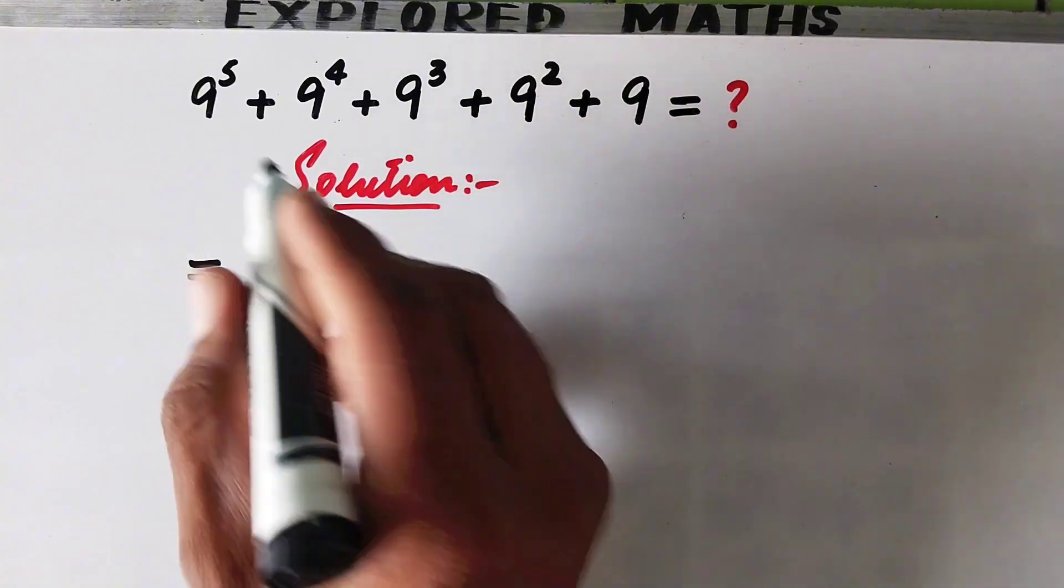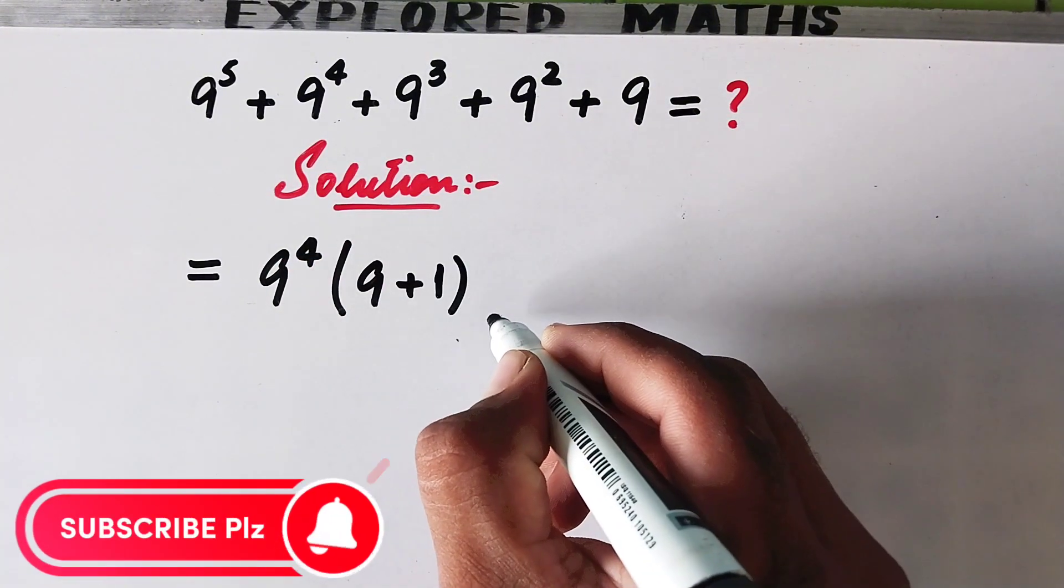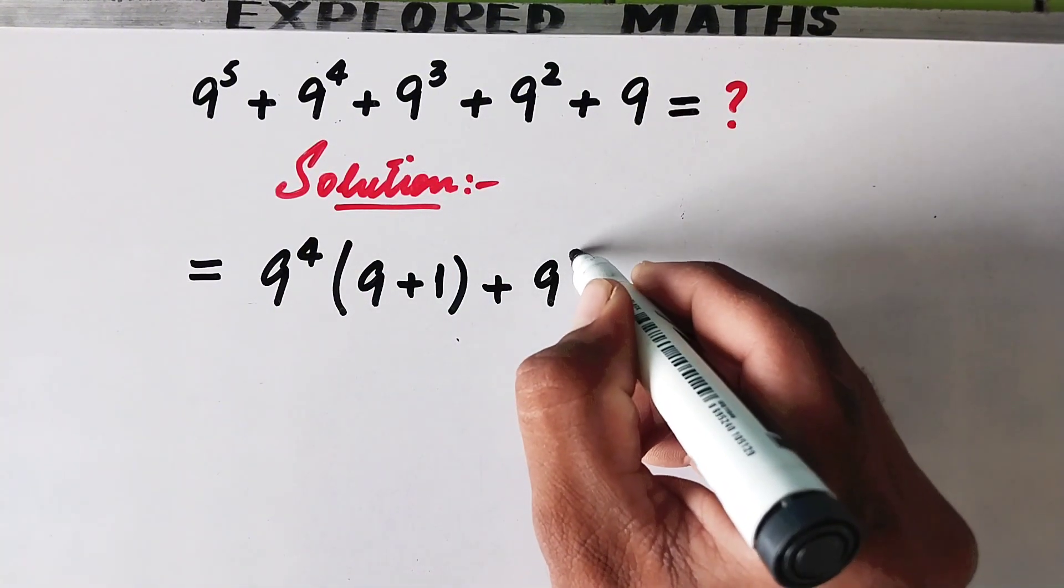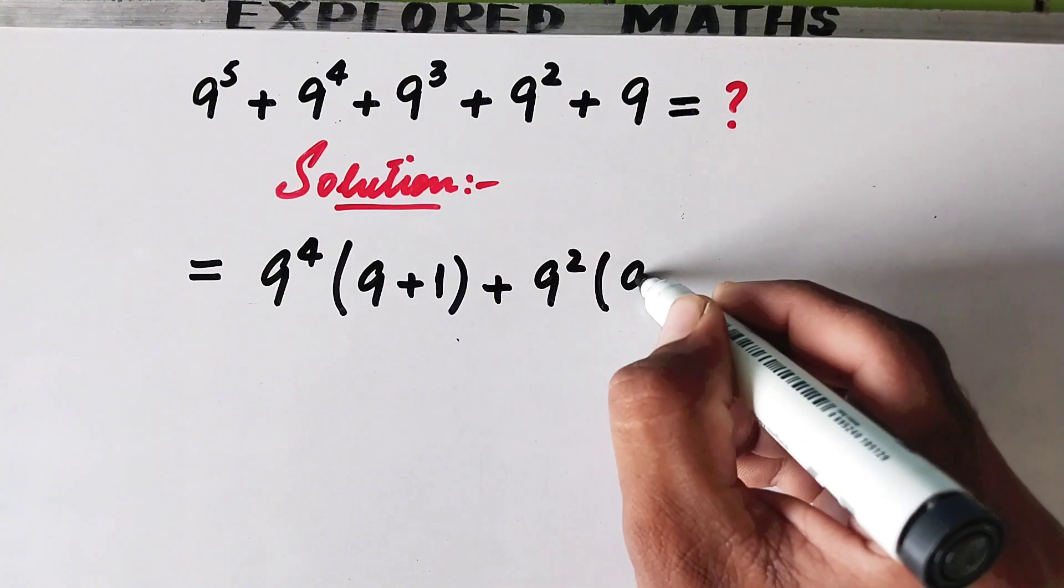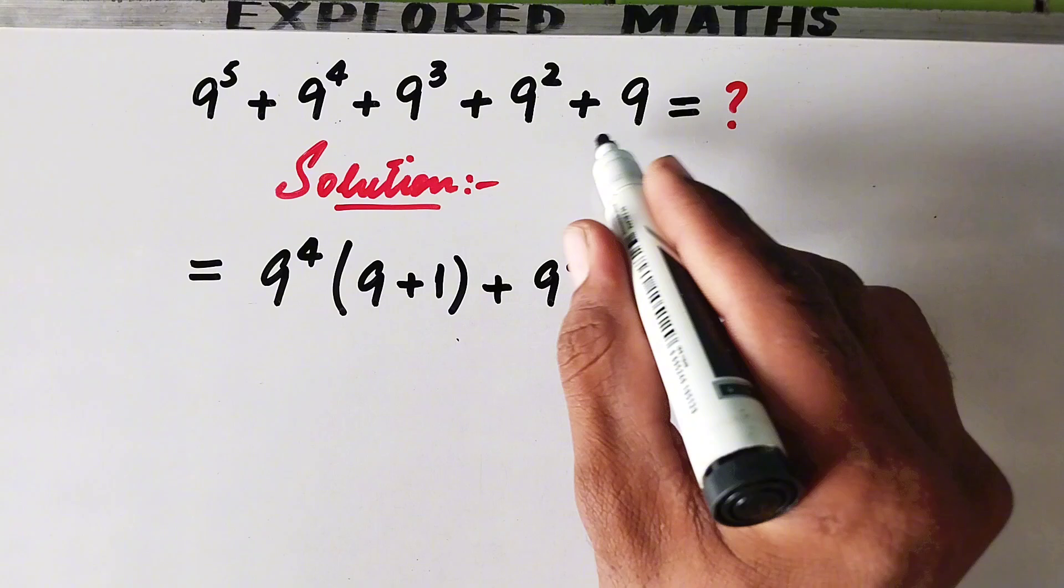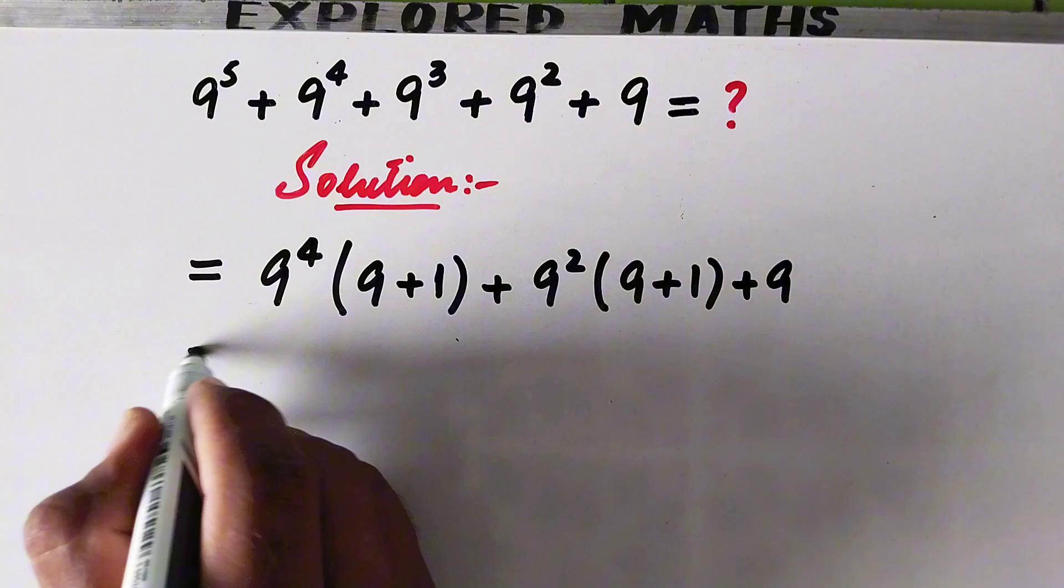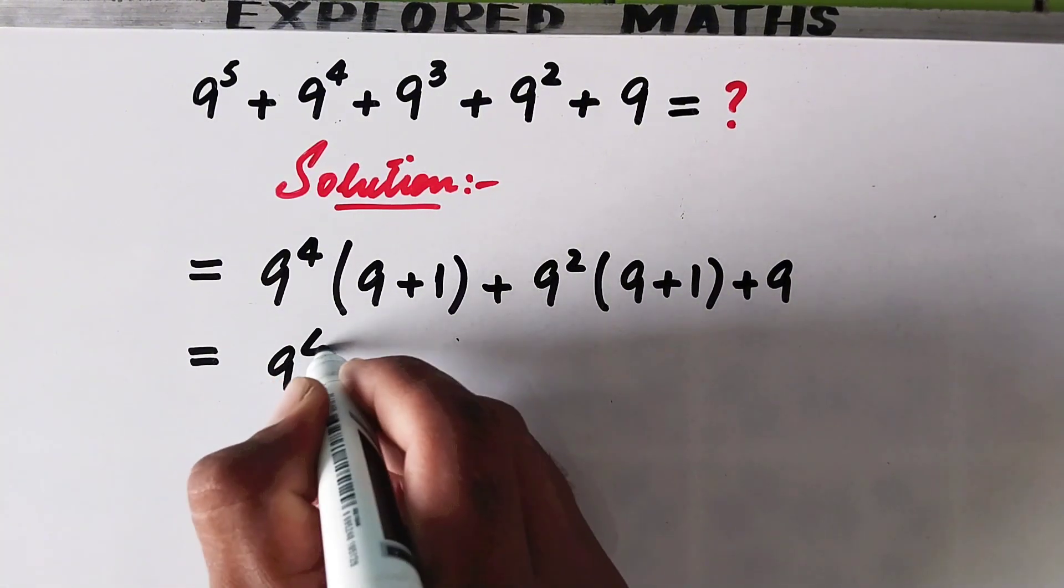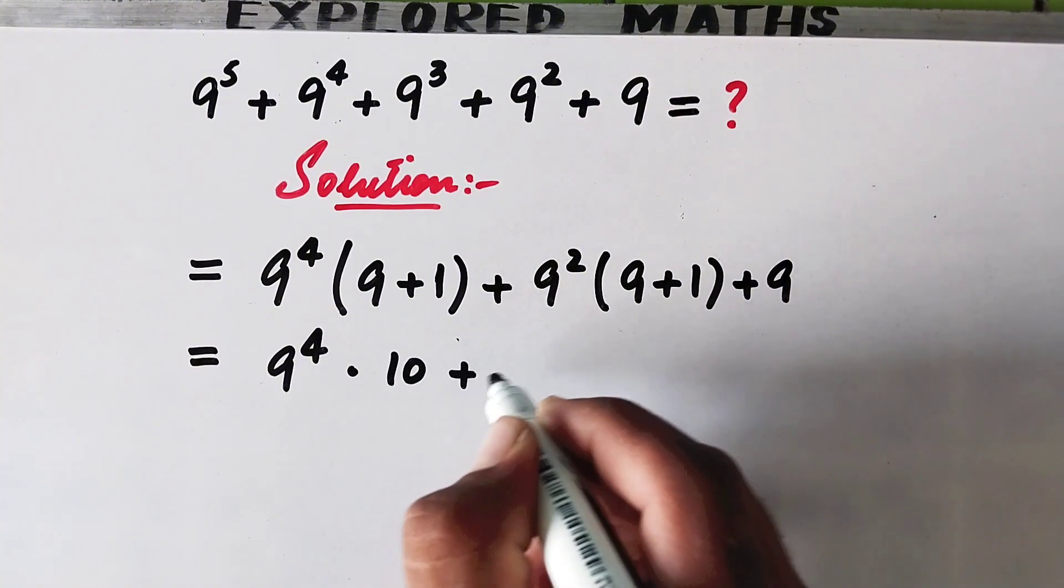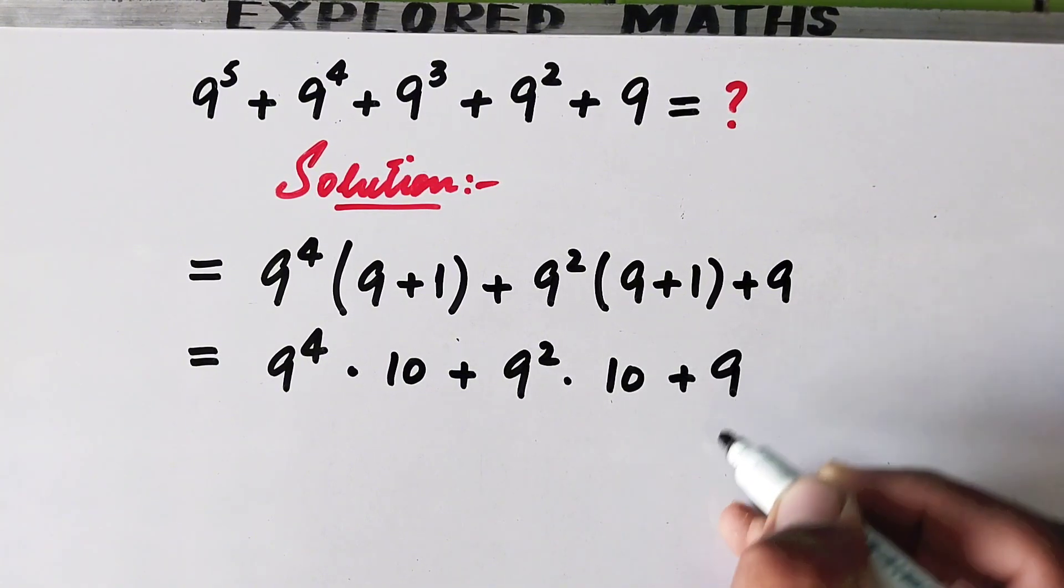So here left will be 9 plus 1. From these two values we can take 9 square common, so that here also left will be 9 plus 1, and here left is plus 9. This implies that 9 to the power 4 times (9 plus 1) is 10, plus 9 square times 10, plus 9.